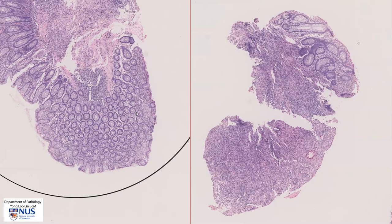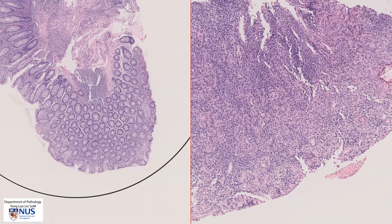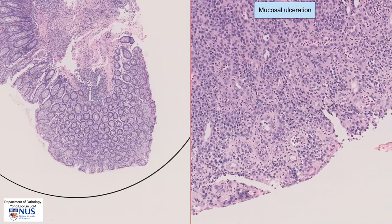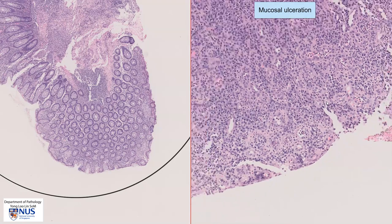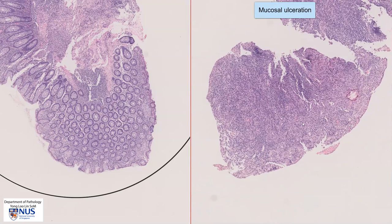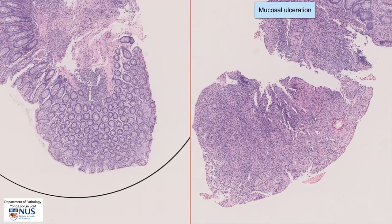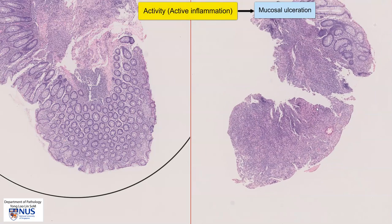Here, side by side, are two other examples of Crohn's disease, and both of these are small biopsies. Let's first take a look at the example on the right side — this is a piece of colonic mucosa. Over here we see mucosal ulceration with this ulcer bed, granulation tissue, lots of blood vessels accompanied by acute and chronic inflammation. So there is mucosal ulceration, which is a feature of activity or of active inflammation.